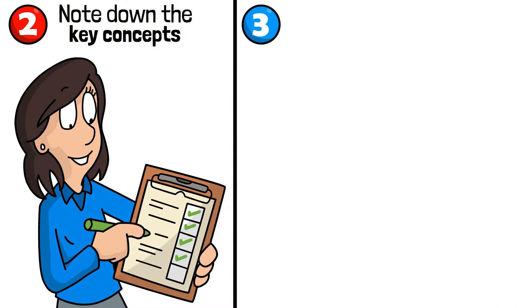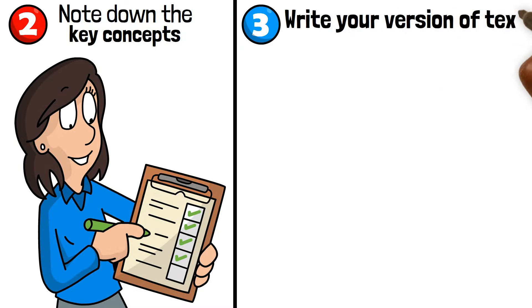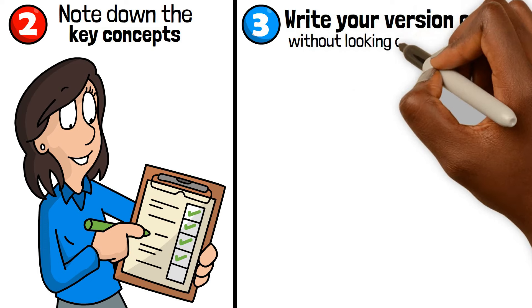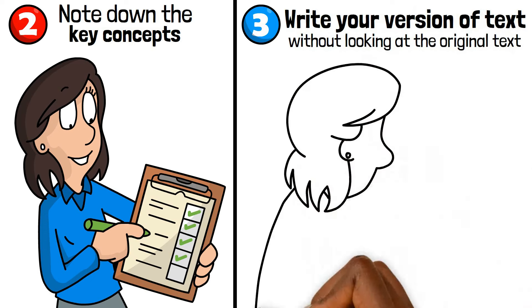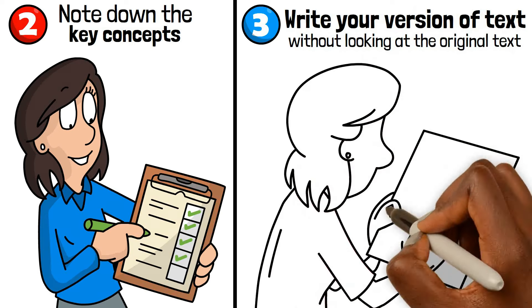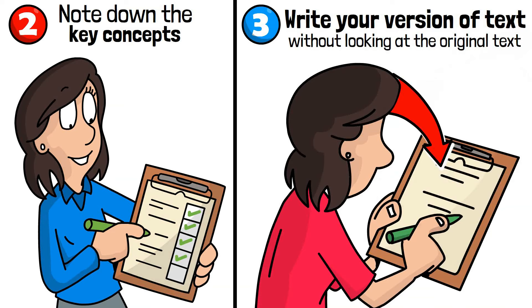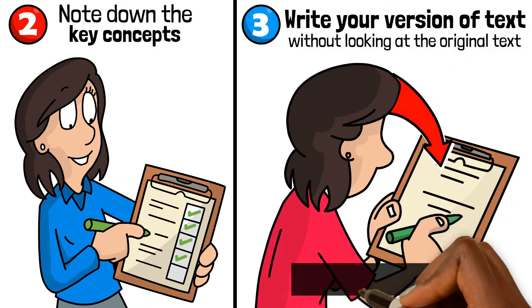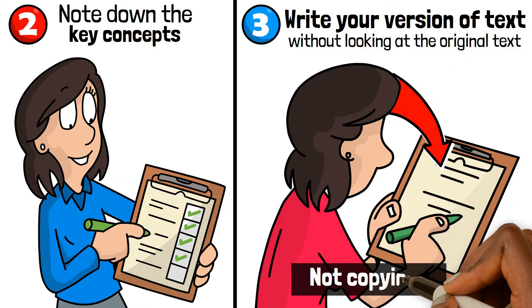Step number three: write your version of the text without looking at the original text. Put aside the original text so you can't see it. Paraphrase your version of the text from memory. Ensure you're not copying out the text word for word.